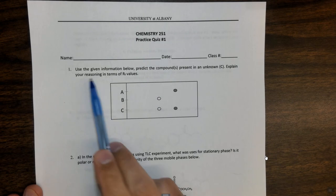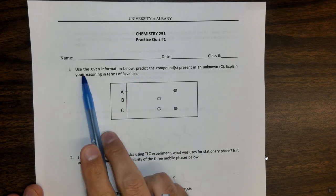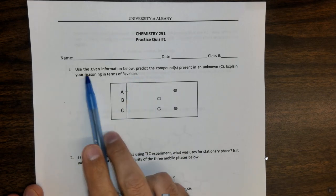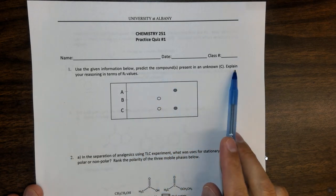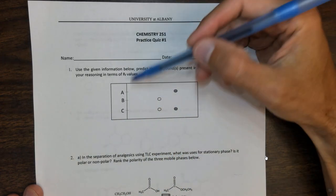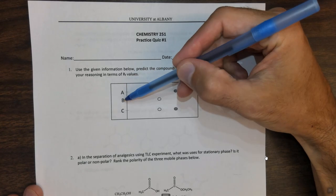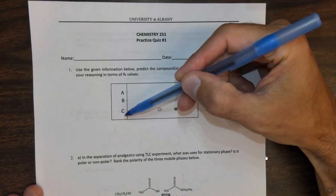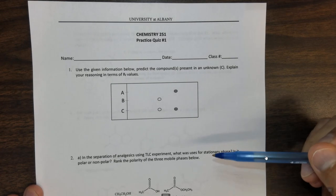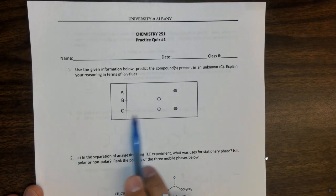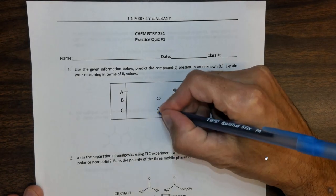The first question says use the given information below, predict the compound present in the unknown C and explain your reasoning. So we have A, which is a standard, B, which is a standard, and we have C, which is an unknown mixture. So let's take a look at this. There's two things that we want to notice.